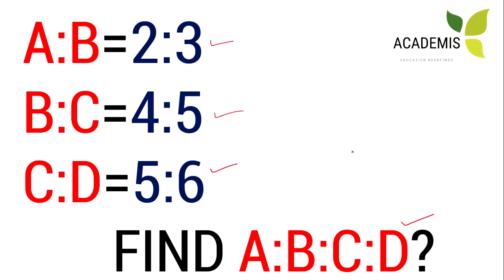This is not the direct method. This is the conventional method. This is our first class in the ratio and proportion class — A is to B and B is to C.